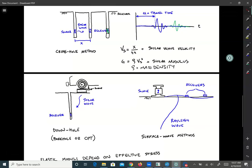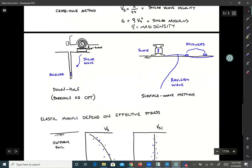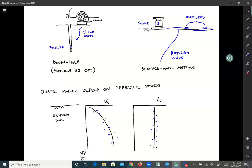The crosshole and downhole methods are invasive, which means we need a borehole or to push a cone into the ground. Crosshole can be done with cones too, but you need multiple cone rigs, so it gets complicated. Sometimes we don't want to do an invasive method. We want to do something non-invasive, and there are surface wave methods.